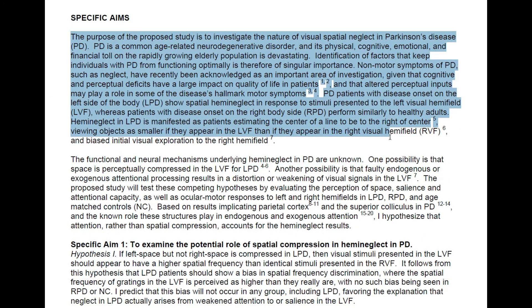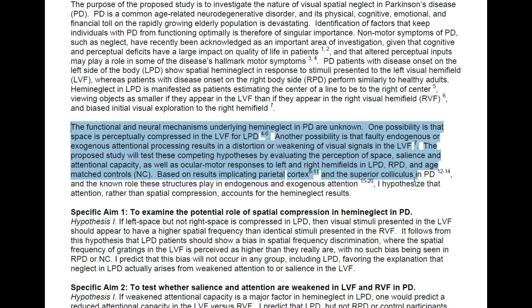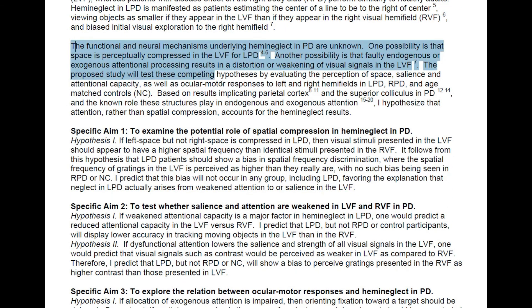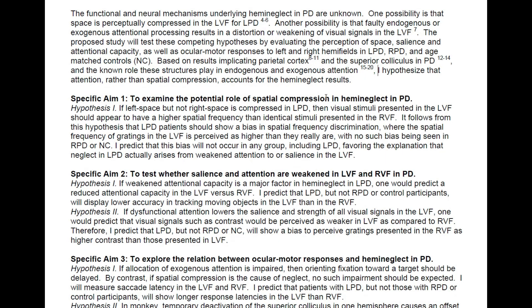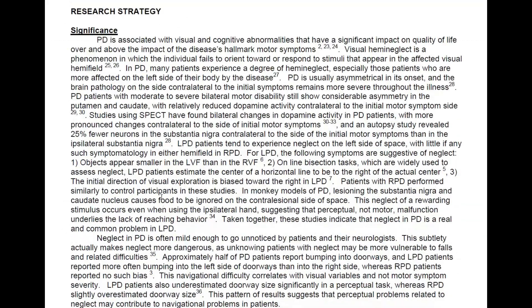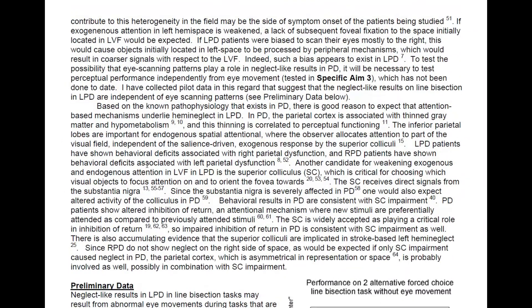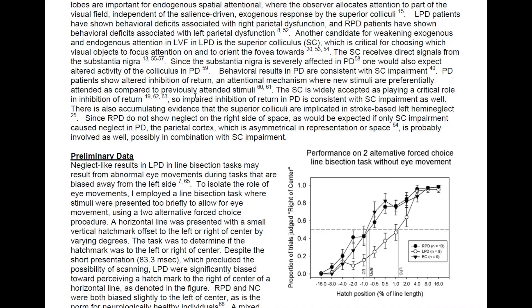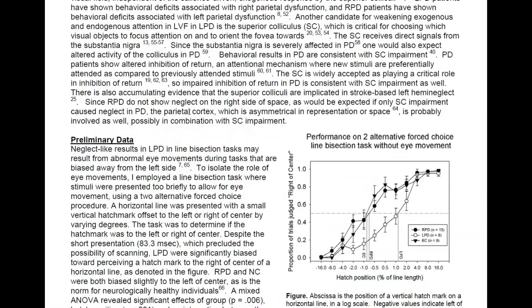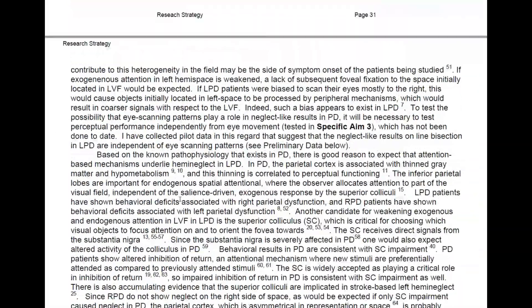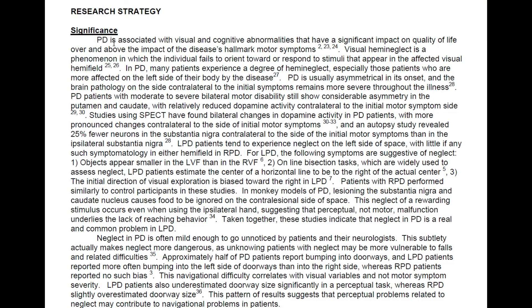The first paragraph basically says Parkinson's disease is terrible. A bunch of things in Parkinson's really affect people's lives beyond the motor symptoms — beyond the tremor and the rigid muscles that are the hallmarks of PD. There are cognitive and perceptual effects from Parkinson's that are much lesser known. The next paragraph says we don't understand one of those — hemi-neglect — and then basically states it could be one of three things that causes it, and I'm going to test those three things in this grant, which correspond to my three specific aims. The background section called 'significance' is about a page and a half.